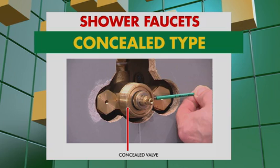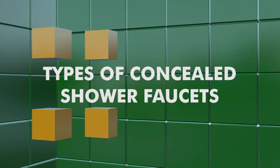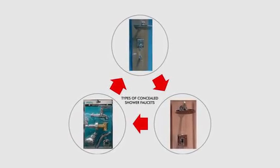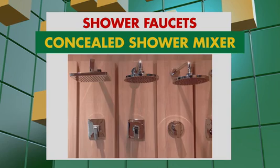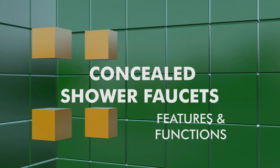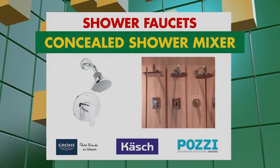Ang recess or concealed shower faucets ay may concealed bag na kailangan mong itago sa tiled wall ng shower area, kaya expert na plumber ang kailangan para ito ay may kabit ng tama. Ang concealed shower faucets na available sa Wilcon ay: concealed shower mixer, concealed bath filler shower mixer with spout, at ang concealed cold top shower faucets. Ang concealed shower mixer ay may isang function — ang overhead shower — at ito ay available sa Grohe, Cash, at Posee brand.